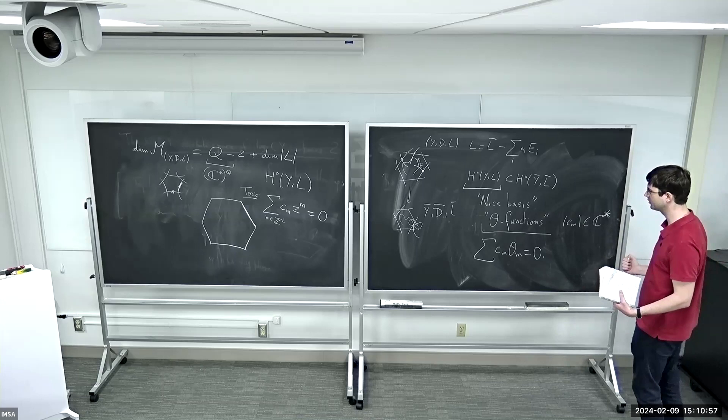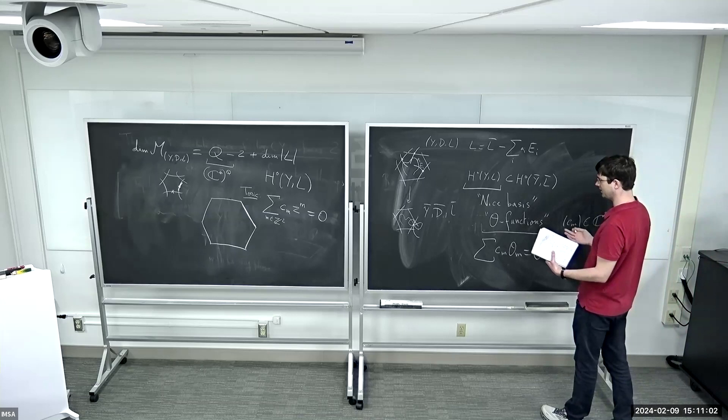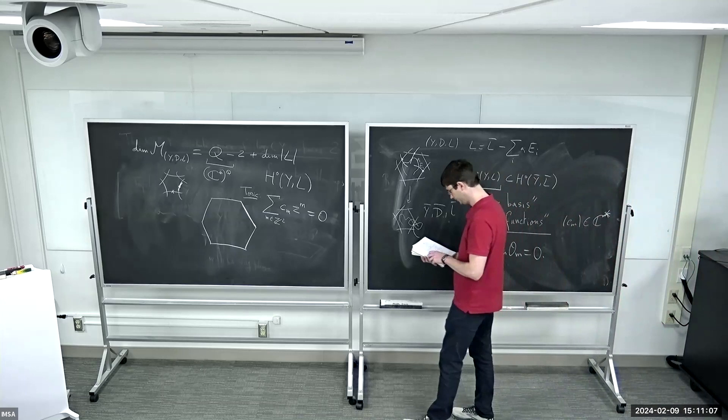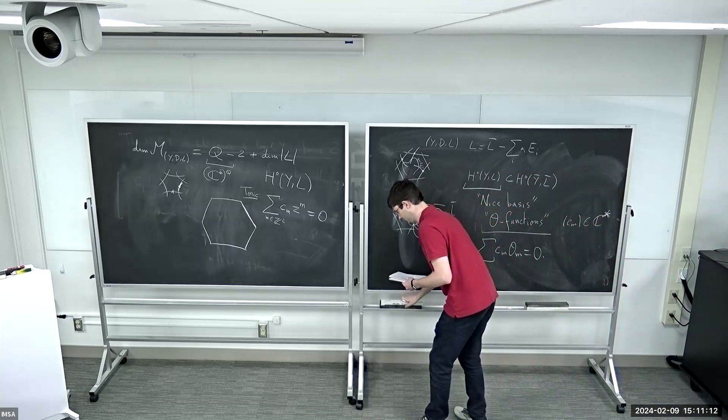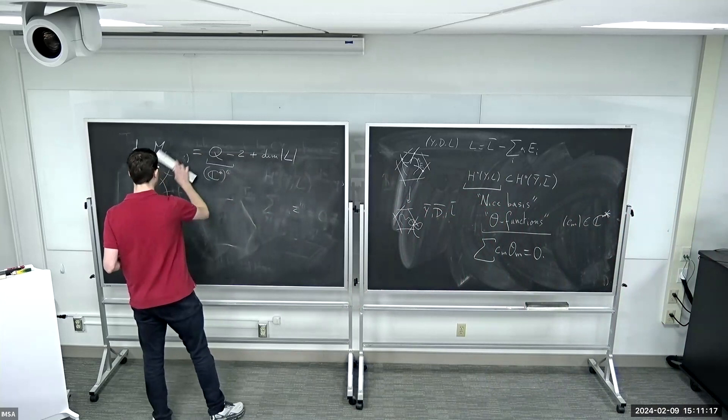So there will be a full non-trivial story involving mirror symmetry, in relative geometry, and Gromov-Witten type invariants, whose goal is to produce this object. We don't know if there is a more elementary description of them. So this is how the conjecture was formulated.